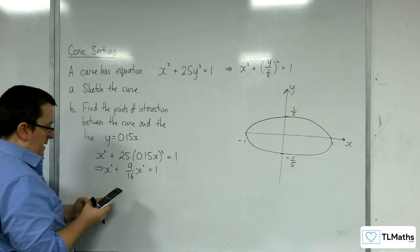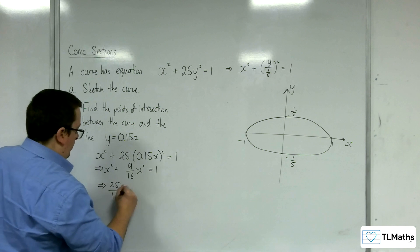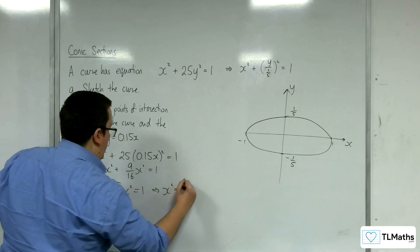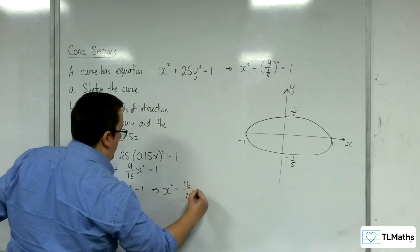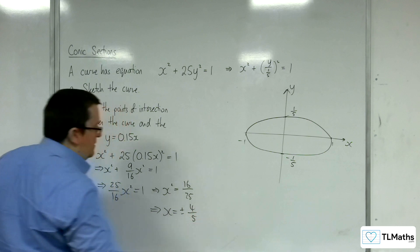So, that's 25 sixteenths x squared equals 1. So, x squared must be equal to 16 over 25. So, x is equal to plus or minus 4 over 5.